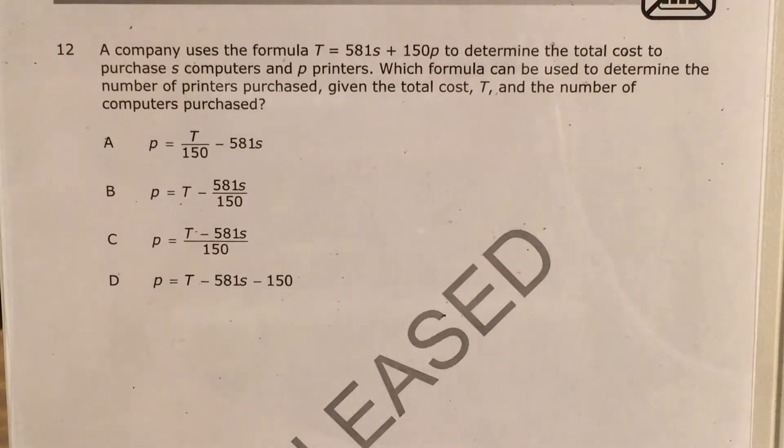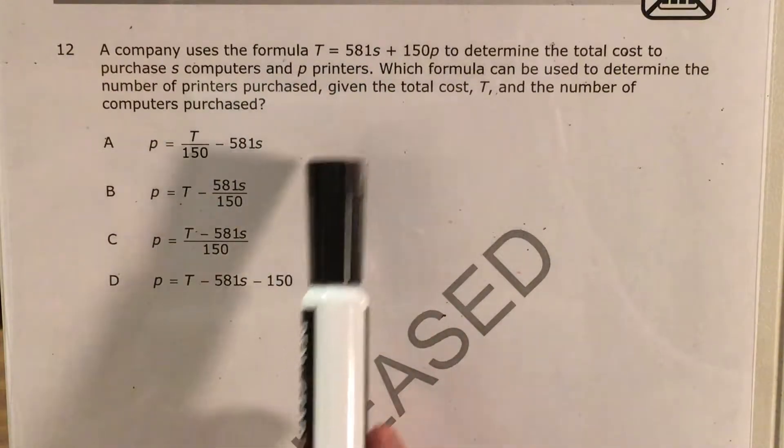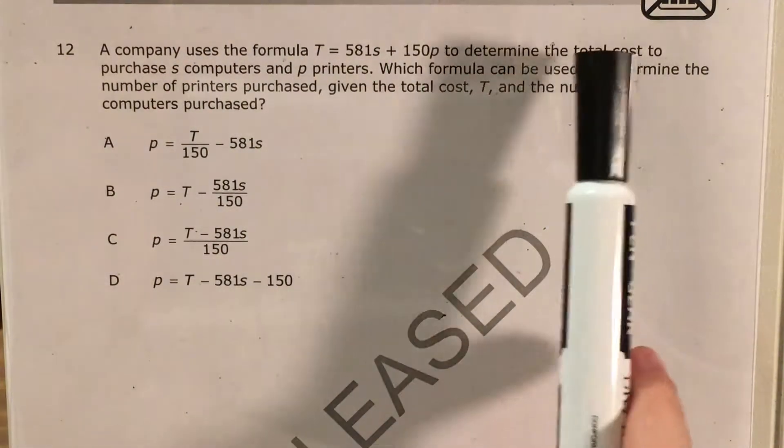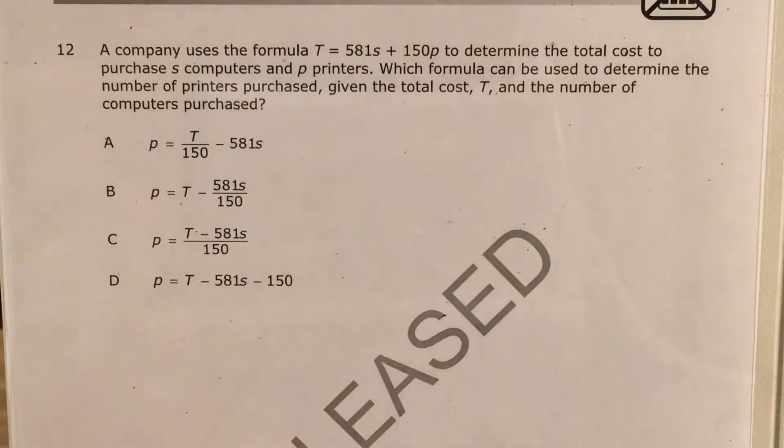Today we're going to tackle question 12 in the Math 1 questions that North Carolina released this past school year. The question says that a company uses this formula, which has one, two, three letters in it, oh goodness, to determine the total cost, which I assume is T, to purchase S computers and P printers.